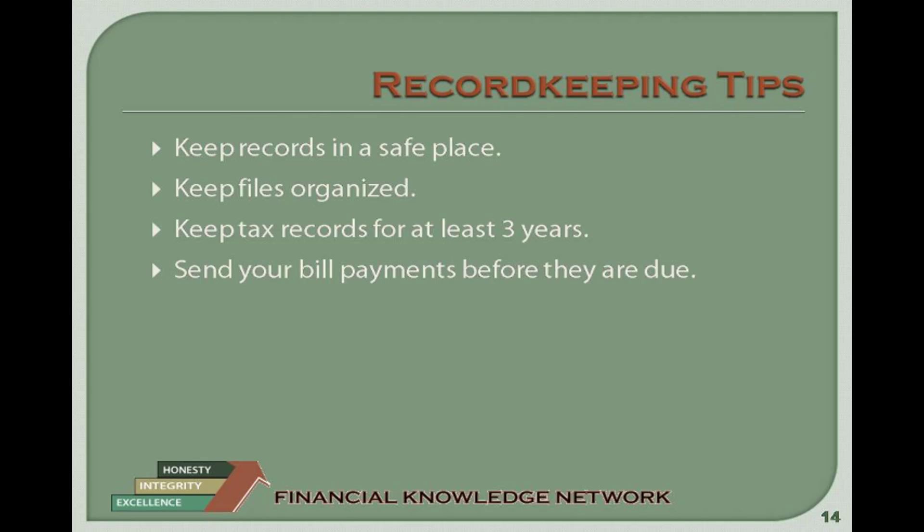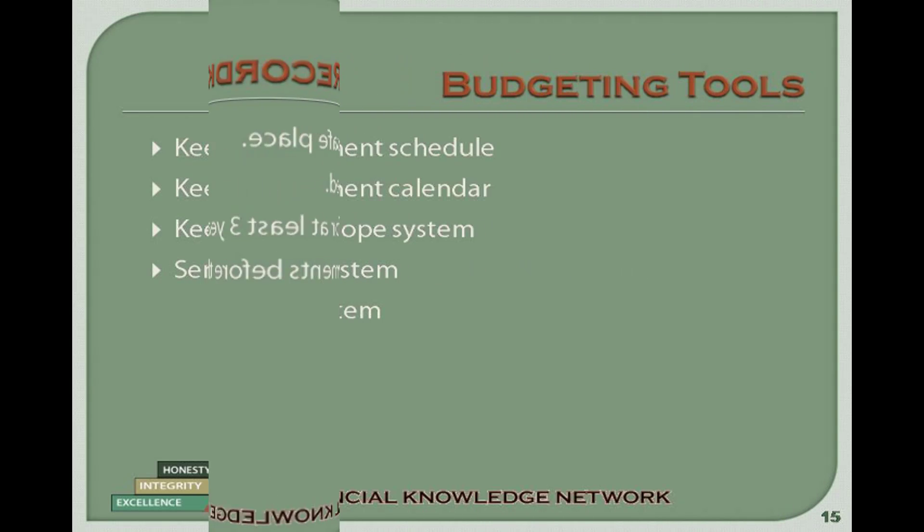Bank account number and routing number for direct deposit, and all other information relating to this year's return. To obtain the location, dates, and hours of the volunteer site closest to you, call the IRS toll-free tax helpline for individuals at 1-800-829-1040. The AARP provides free tax assistance to elderly taxpayers. For AARP sites, call 1-888-AARP-NOW, that's 1-888-227-7669. Remember, you must provide accurate information when applying for these benefits. Tax fraud is a serious offense.